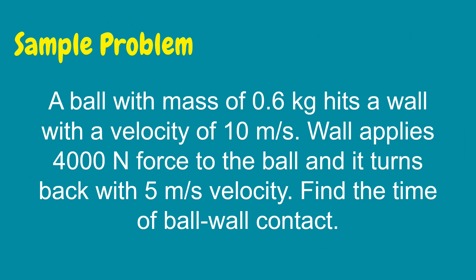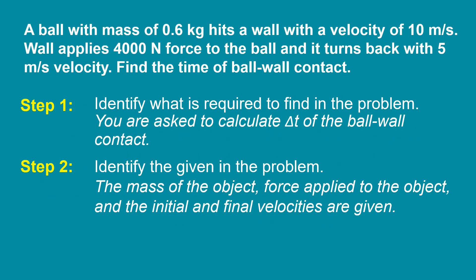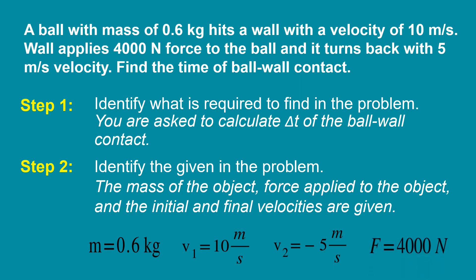Let's solve another sample problem about impulse. A ball with a mass of 0.6 kilograms hits a wall with a velocity of 10 meters per second. The wall applies a 4,000-newton force to the ball and it turns back with a velocity of 5 meters per second. Find the time of ball-wall contact. To solve it, let's follow the following steps. Step 1: Identify what is required — you are asked to calculate the change in time of the ball-wall contact. Step 2: Identify the given: mass is equal to 0.6 kilograms, initial velocity is equal to 10 meters per second, final velocity is equal to negative 5 meters per second, and force is equal to 4,000 newtons.